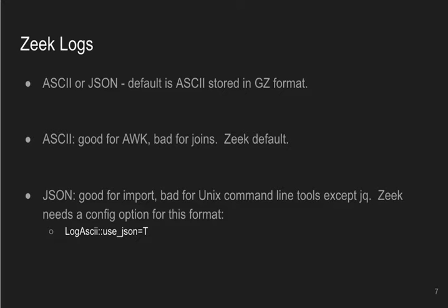On the other hand, you can have Zeek output JSON — you turn it on with the command `redef LogAscii::use_json = T`. JSON is not the Zeek default, which is one reason I wrote this program: I have years of data saved in the tab format. If your logs are already in JSON format, this presentation doesn't really apply — you could use Elastic's Filebeat to push that into Elasticsearch, or craft the bulk import yourself. Hit me up on the open source Zeek Slack server for more.